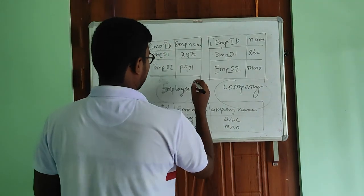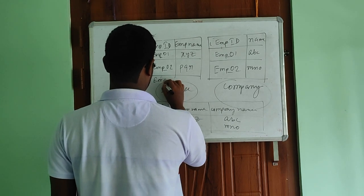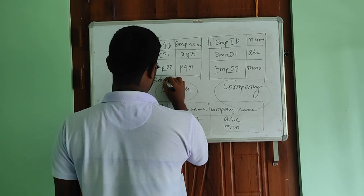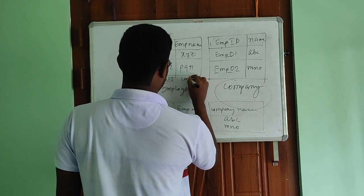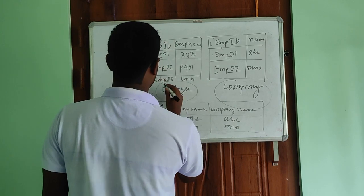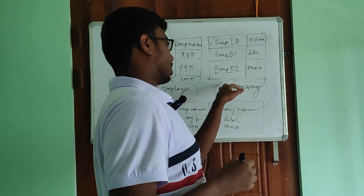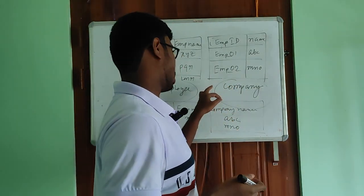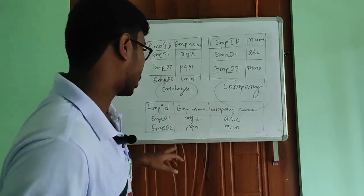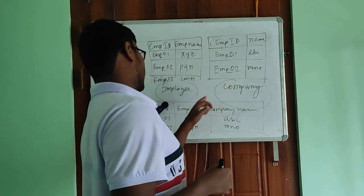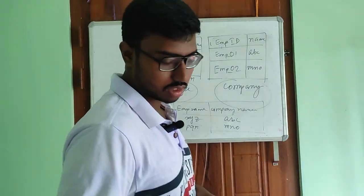Now what if there is an employee03 with name LMR? That record exists in the left table but does not match anything in the right side table. In that scenario, the company name column will be null. So if a left side entry does not match on the right side, the corresponding column will be null. This is the left join concept.